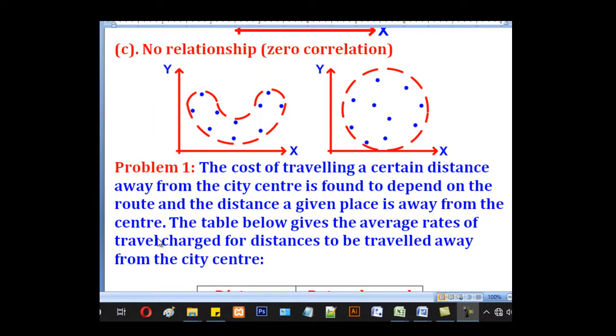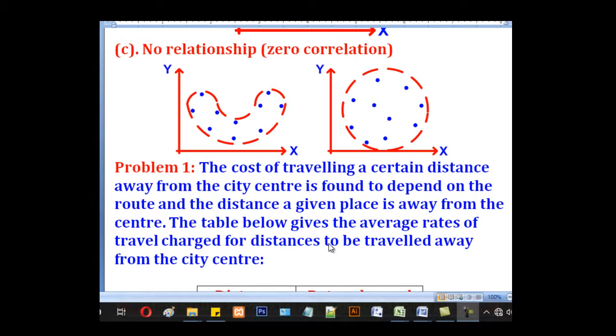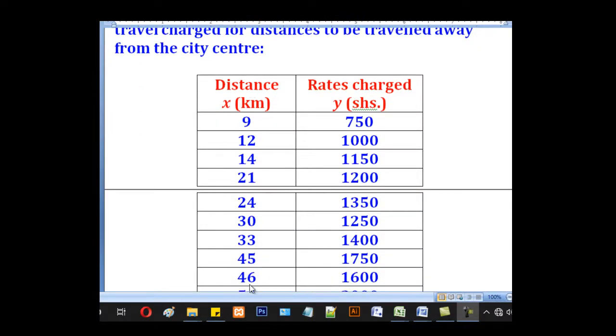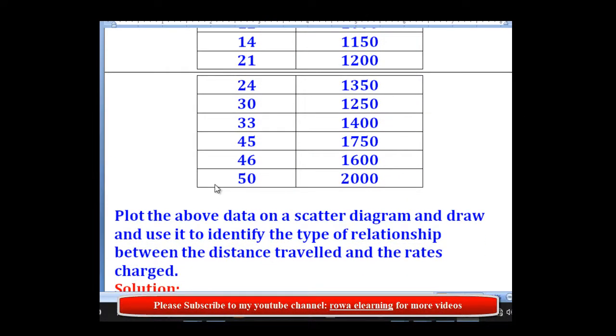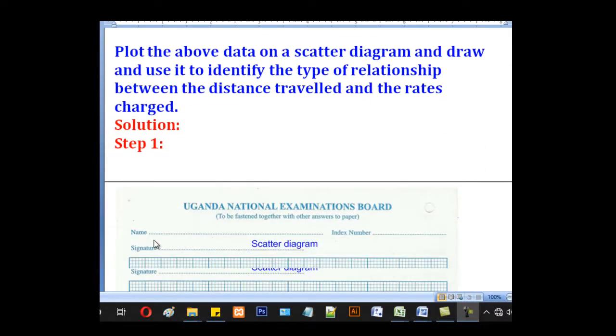So for today, we shall go through this problem. The cost of traveling a certain distance away from the city center is found to depend on the route and the distance a given place is away from the center. So the table below gives the average rates of travel charged for distances to be traveled away from the city center. So this is the table that shows the values of X, which denote the distance traveled in kilometers, and the values of Y, which denote the rates charged for each corresponding distance. So they want us to plot the above data on a scatter diagram and draw and use it to identify the type of relationship between the distance traveled and the rates charged.